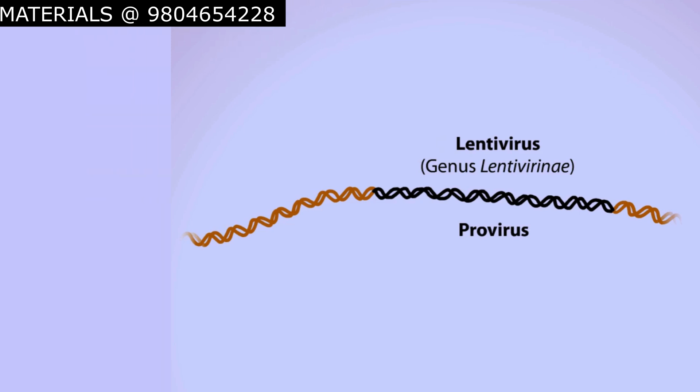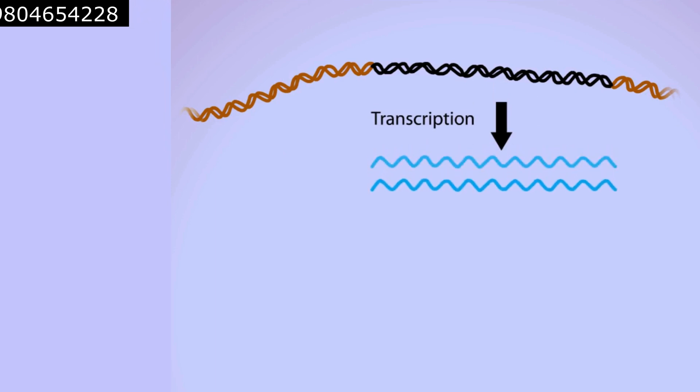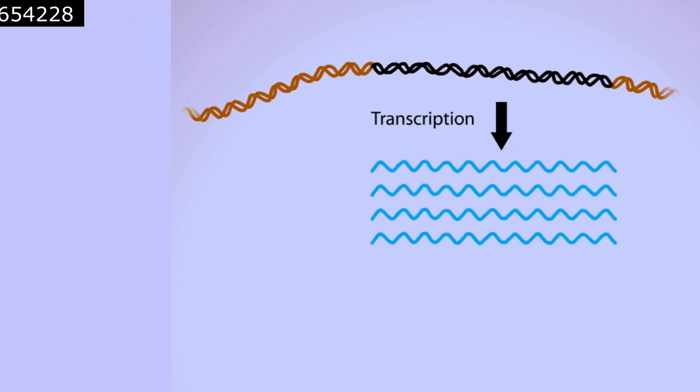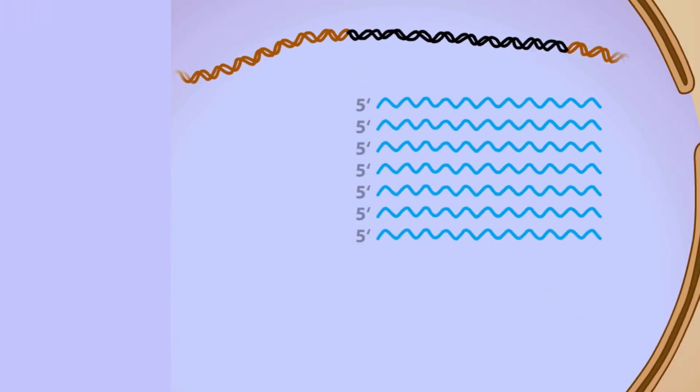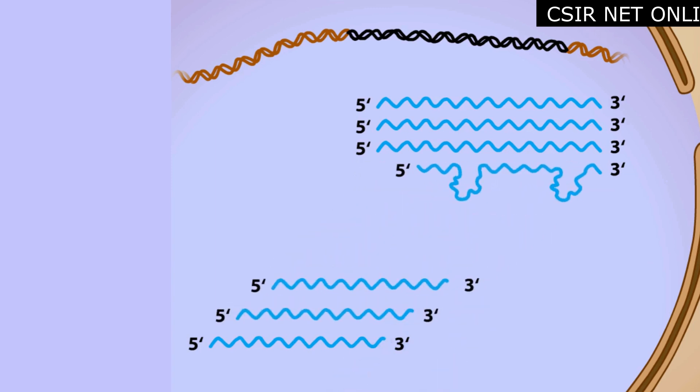It is also required for the production of new virions, which begins when RNA polymerase 2 from the host cell transcribes the integrated viral DNA. Just like the host cell mRNAs, the HIV RNA acquires a 5' capping and a 3' polyadenylation tail. A diversity of full-length and spliced RNAs are produced.